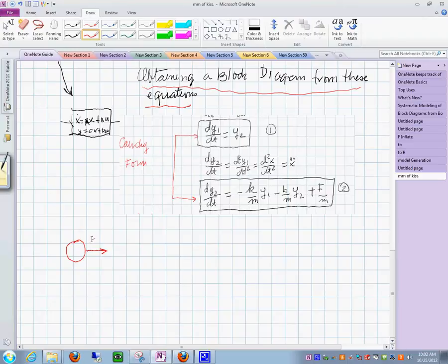This is here. And in here you have one that says minus b over m y sub 2. And then you have another one that says minus k over m y sub 1. And you also have one that says that this input is f over m.